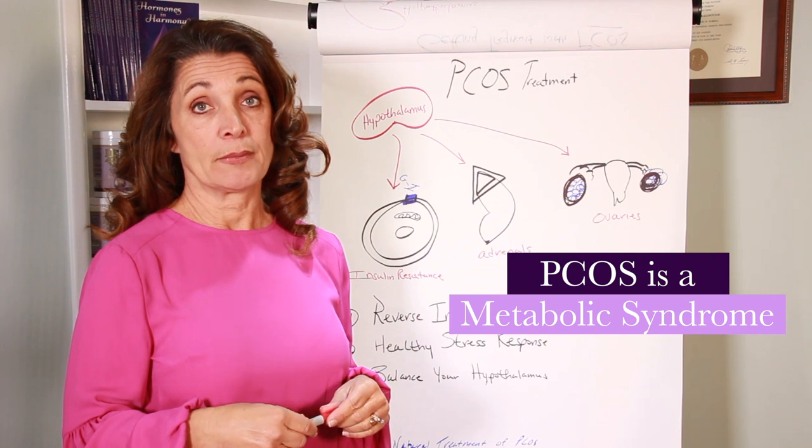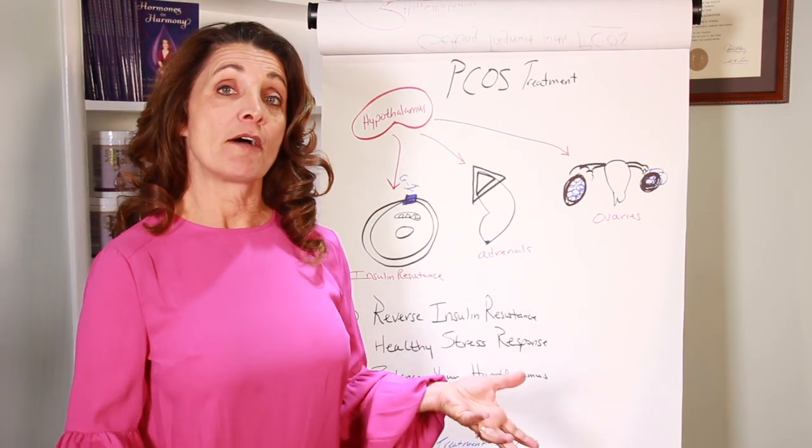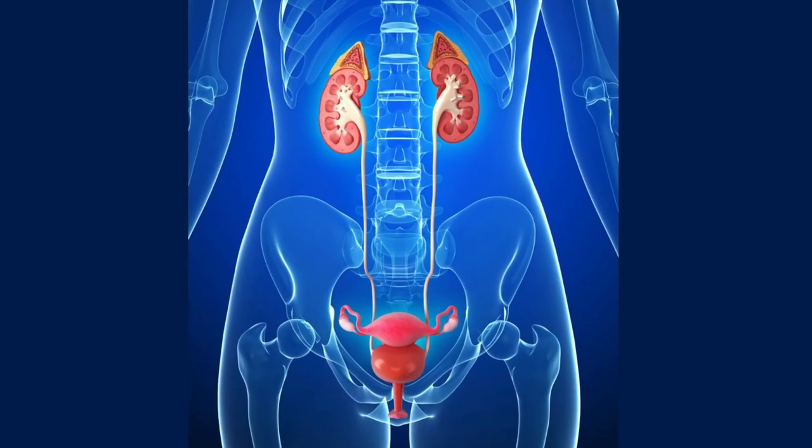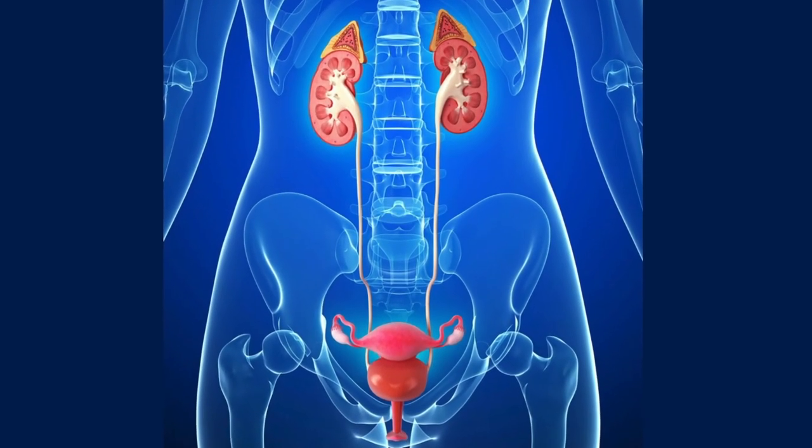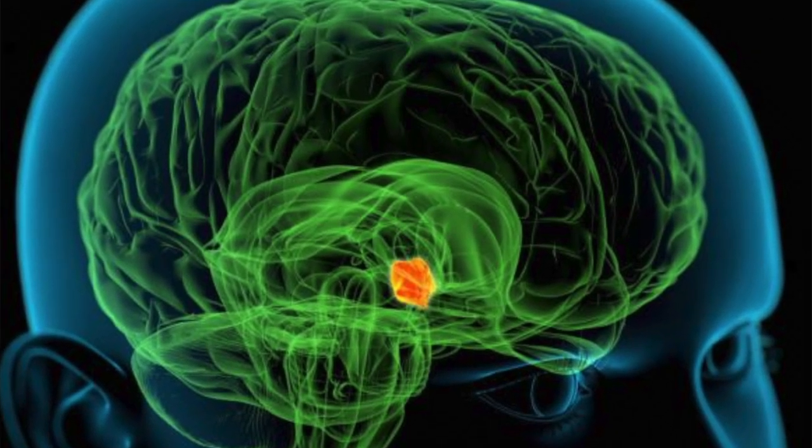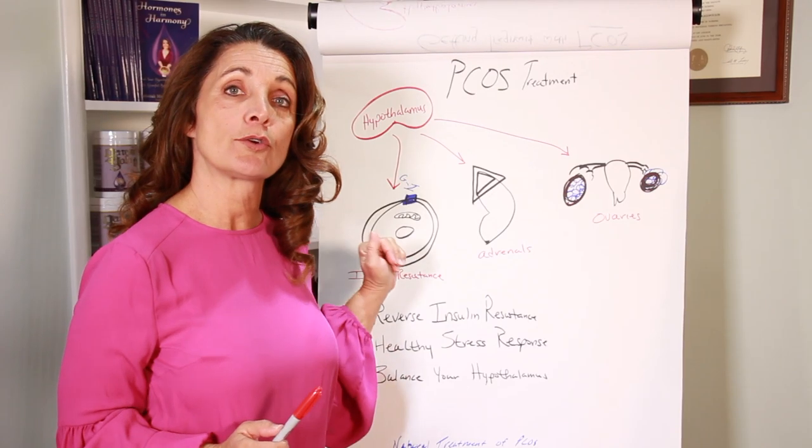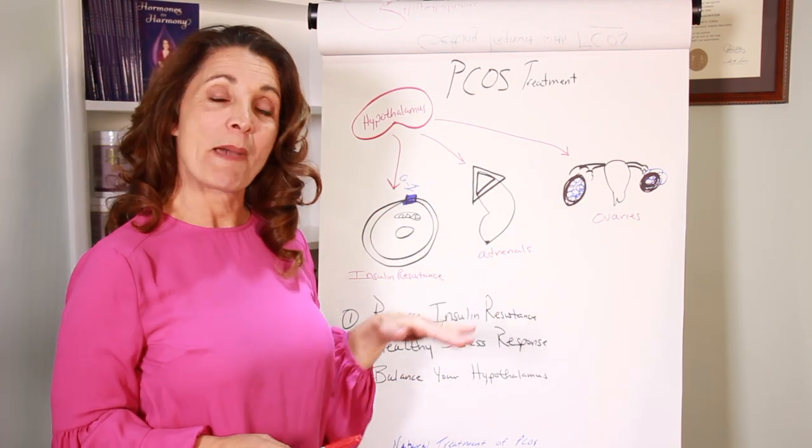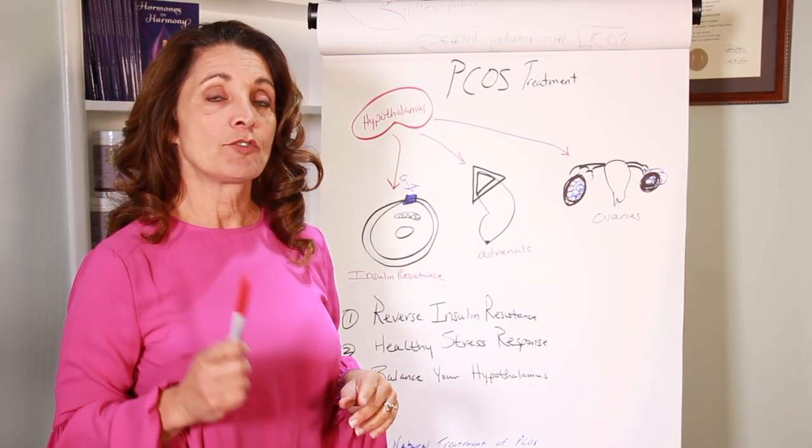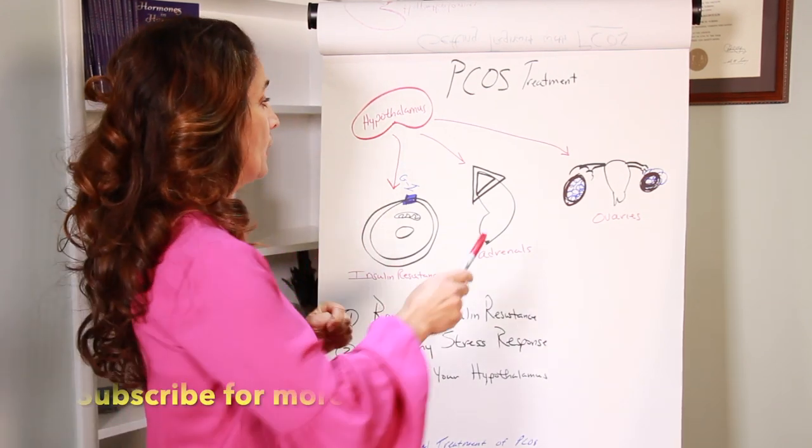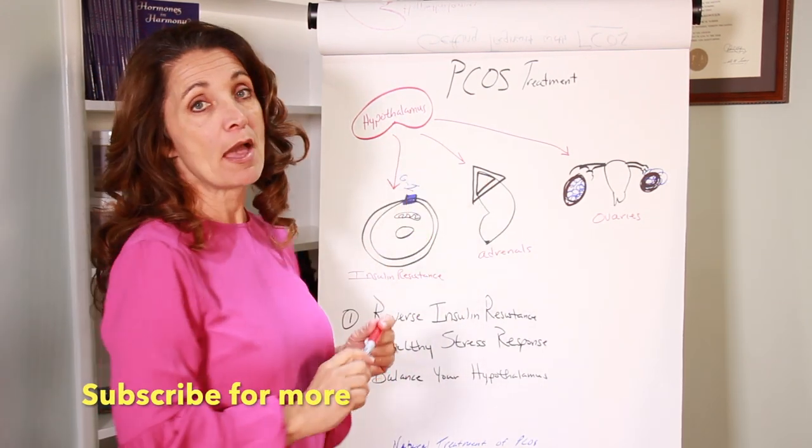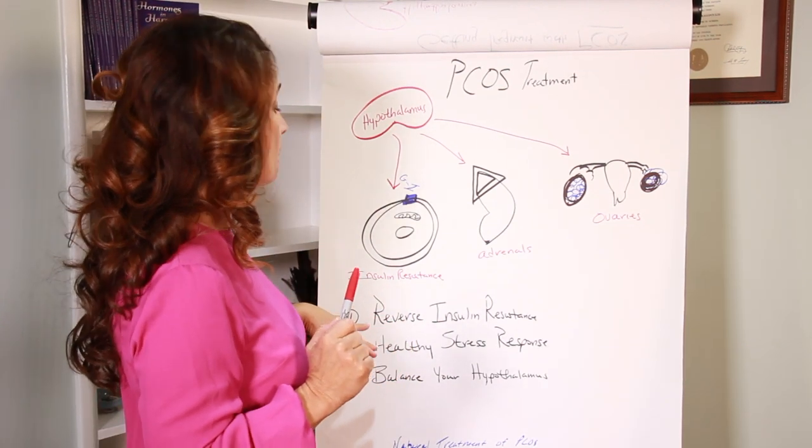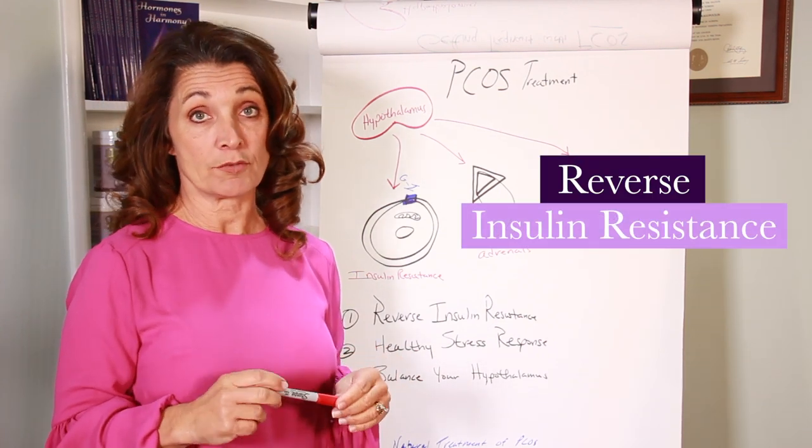PCOS is a metabolic syndrome. That means you have much more inflammation in the body because not just your female hormones are out of balance, but your adrenal hormones are out of balance. Your hypothalamus, which controls your ovaries, your adrenals, and your glucose metabolism, is responsible for getting this back into balance again. It's really critical that you help the hypothalamus do its job better in order for the rest of the body to get back into balance. The very first thing you need to do is reverse your insulin resistance.